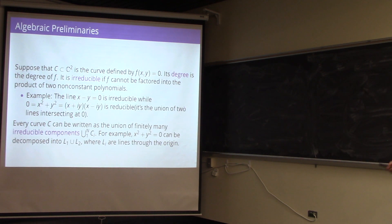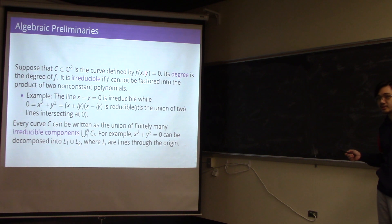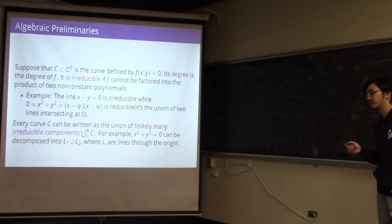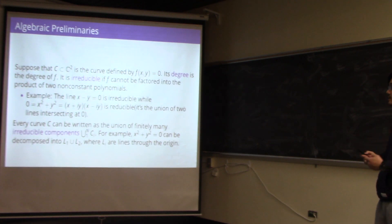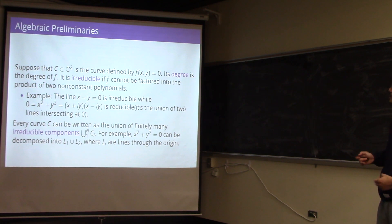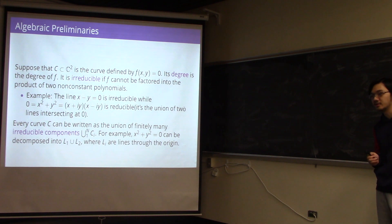Every polynomial can be decomposed into a sum of homogeneous ones. You collect all the monomials with degree zero, degree one, degree two, etc., writing it as f₀ + f₁ + ... + fₙ, where each fᵢ is called the homogeneous part of degree i. Now, the degree of a curve is the degree of its defining equation. We say a curve is irreducible if the polynomial cannot be factored into the product of two non-constant polynomials.